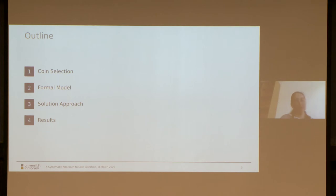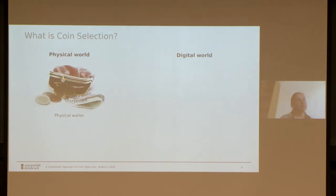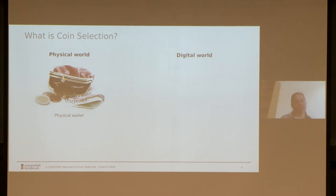Here you can see the outline of my talk. I will first talk about coin selection and what it means, then introduce the formal model, and talk about the solution approach we proposed in the paper and our results. So what is coin selection? When you go to a physical shop and want to pay, for example, for a cup of coffee, you always have to decide which coins you would like to spend — that's the coin selection decision, if you pay by cash.